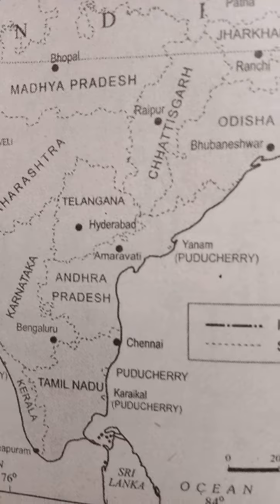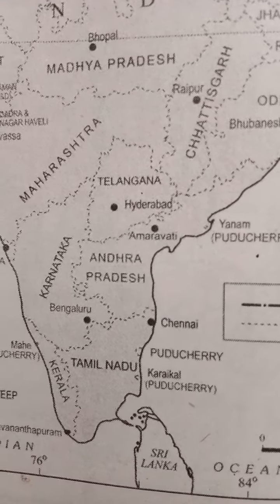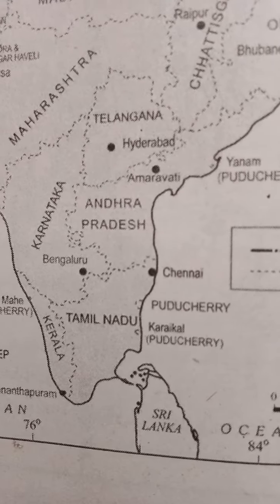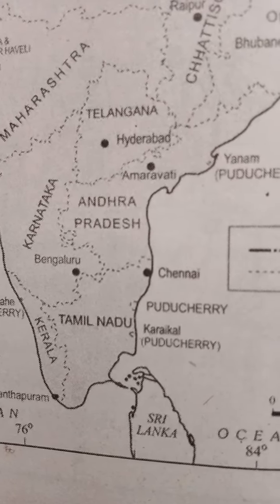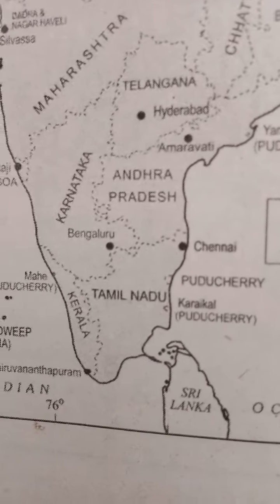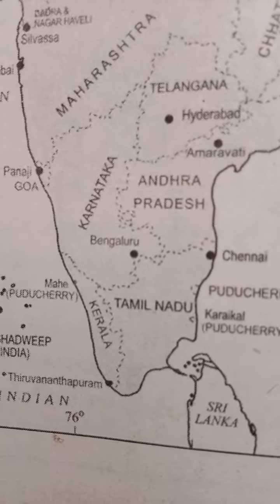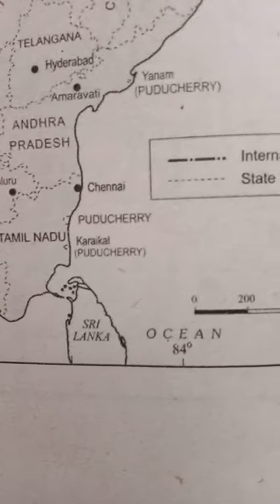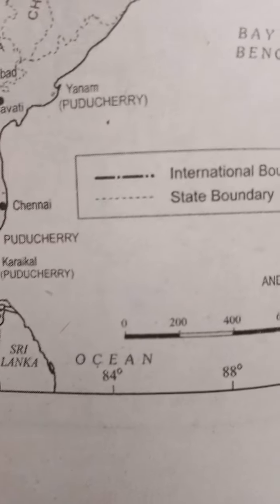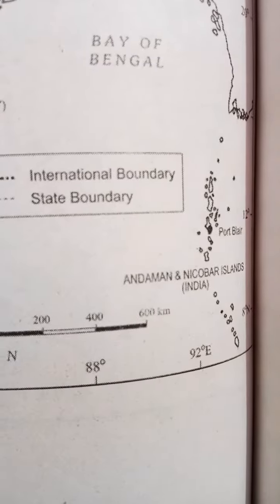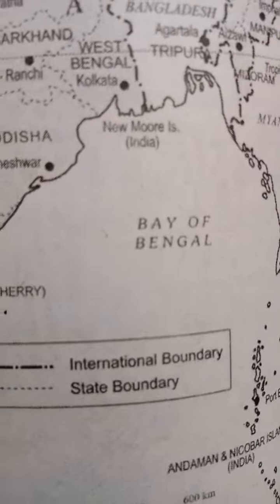Andhra Pradesh has Amaravati here, Karnataka has Bengaluru, Tamil Nadu has Chennai, and Kerala is here. You will also see Sri Lanka on the map nearby.